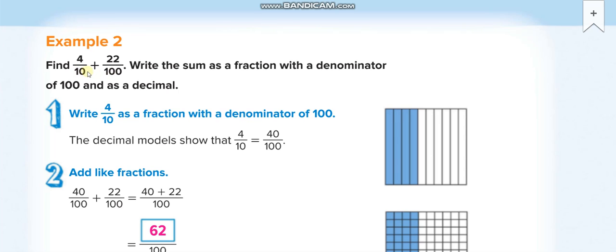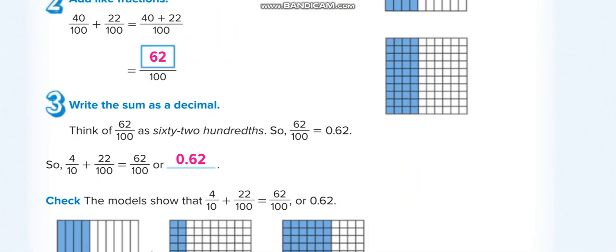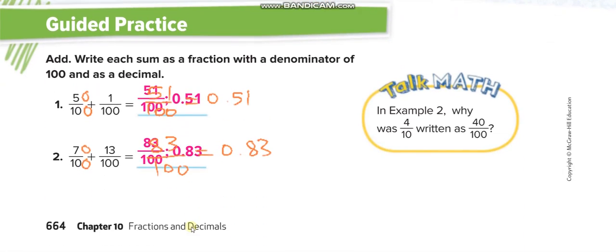So multiply by 10 down and 10 up, it will become 40 over 100. 40 plus 22 equals 62 over 100, which is 0.62. Similarly here, we will multiply by 10 up and 10 down.